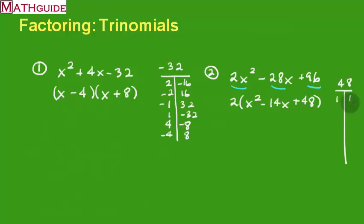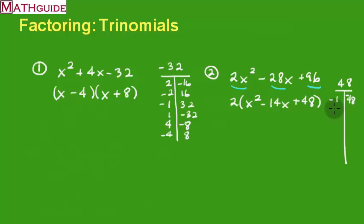Let's try 1 times 48 — those multiply to 48, but when I add them I get 49. I'm trying to get negative 14, so both would have to be negative: negative 1 times negative 48 gives positive 48, and adding gives negative 49. Not close enough. Let's try negative 2 and negative 24 — they add to negative 26. Better than negative 49, but still not working.